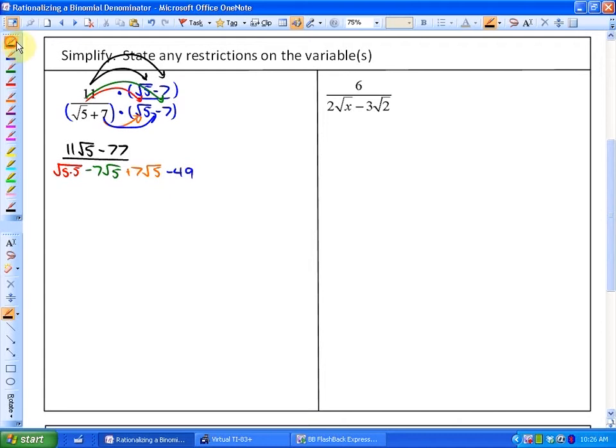So in this particular case, what you'll notice is that these two middle terms, because it's a difference of squares, actually cancel out. And this first term, because it is a pair of 5s, it can come out as a single 5.